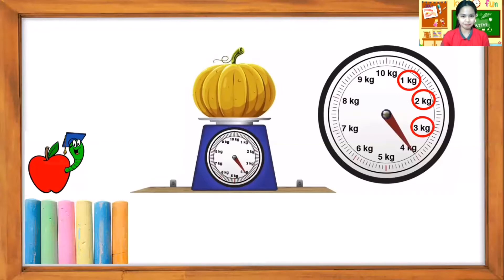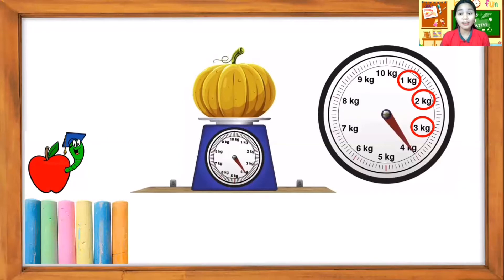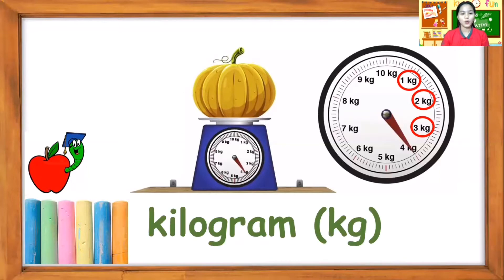So look at the pumpkin. Okay, where does the arrow point in? The arrow is pointing to one kilogram. So the pumpkin is four kilogram. Very good, four kilogram. So in kilogram, we can also write it as kg. Very good. So that is the abbreviation for kilogram — kg.